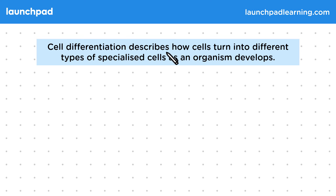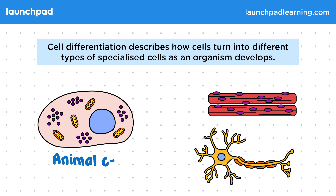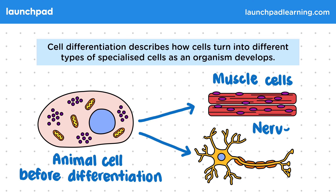Cell differentiation describes how cells turn into different types of specialized cells as an organism develops. This image shows a typical animal cell before it has differentiated, containing features that you should be familiar with. These undifferentiated animal cells can divide and undergo differentiation into specialized cells, like muscle cells and nerve cells. Some cells can become so specialized they only perform one role within the body, for example red blood cells.